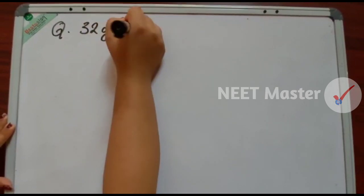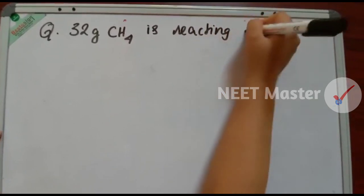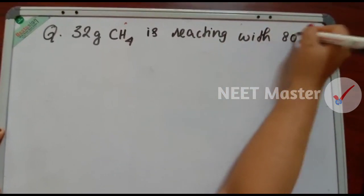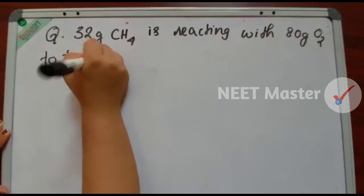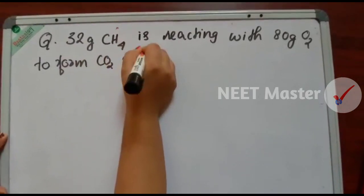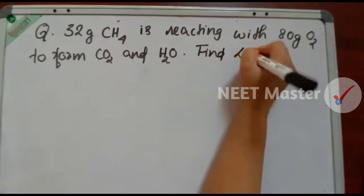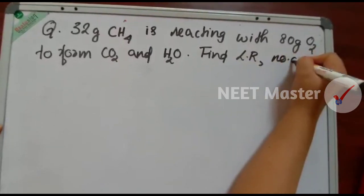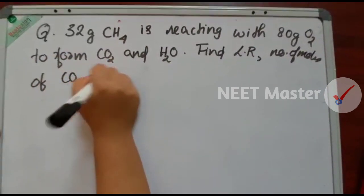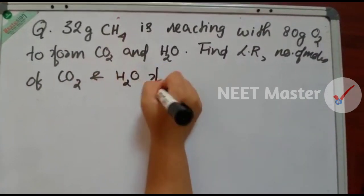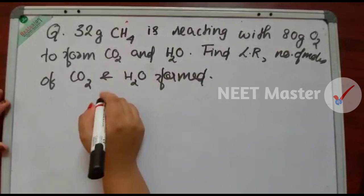32 grams of methane is reacting with 80 grams of oxygen to form carbon dioxide and water. Limiting reagent — number of moles of carbon dioxide and water in this reaction. First step: we will write the combustion reaction — CH4 reacts with O2 to give CO2.